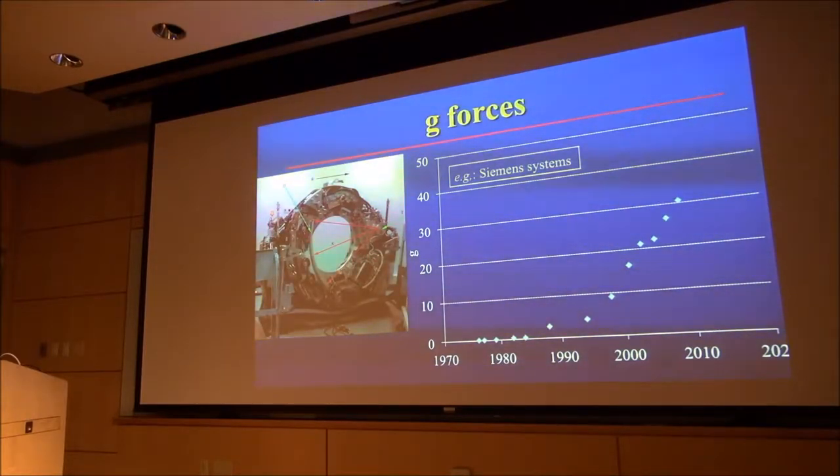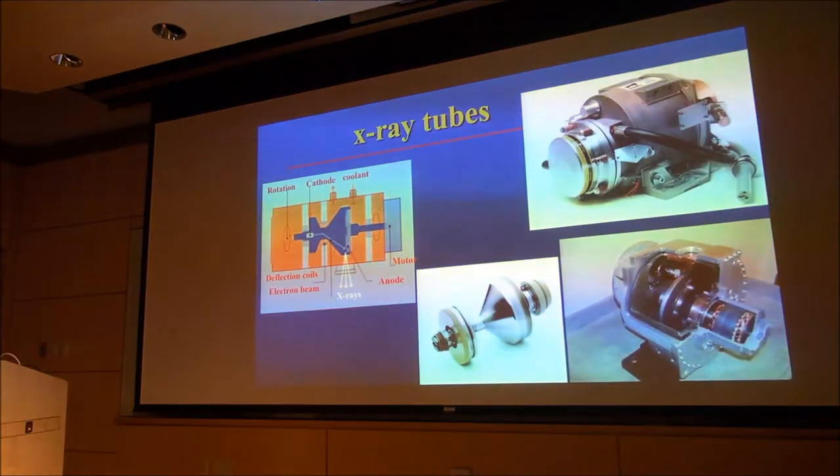The main limit on how fast the CT gantry will rotate is the g-forces on the components mounted on it. This is a plot of the g-forces on the x-ray tube. As this thing rotates these parts are trying to fly off the gantry. We're sitting here now at 30 g's. That's the force on the x-ray tube of a CT scanner. This is much higher than the g-forces on an astronaut during takeoff of the space shuttle.